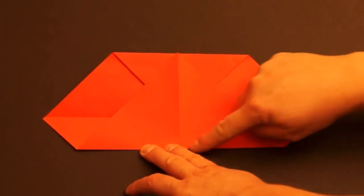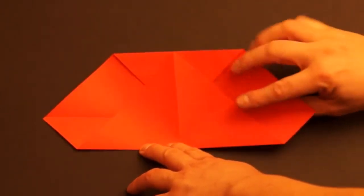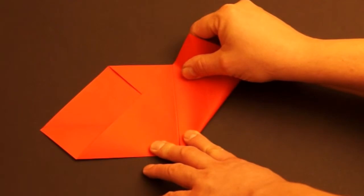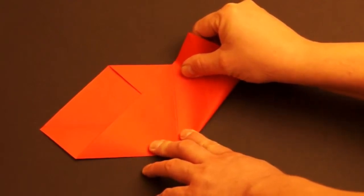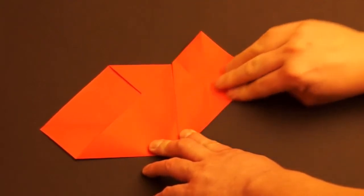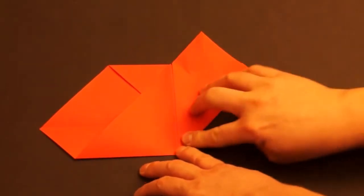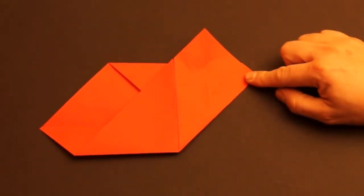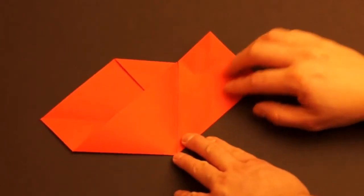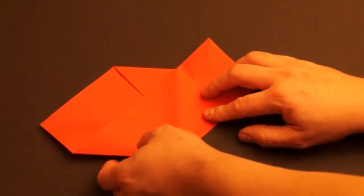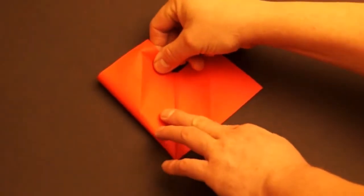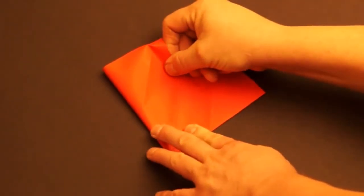Fold the bottom right edge up so that it lines up down the center. Do the same thing to the other side. Fold the bottom left edge up so that it lines up down the center. They should meet in the middle.